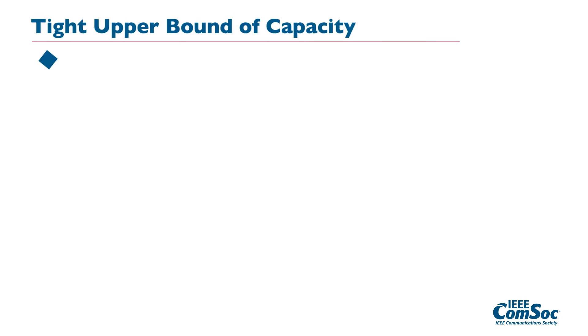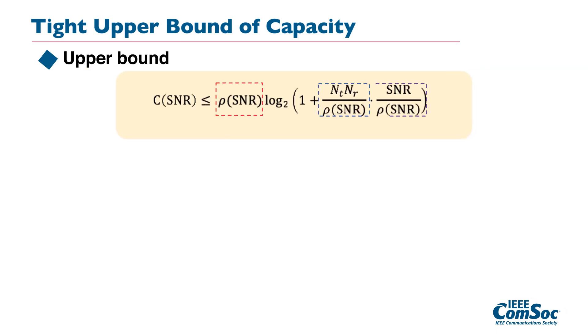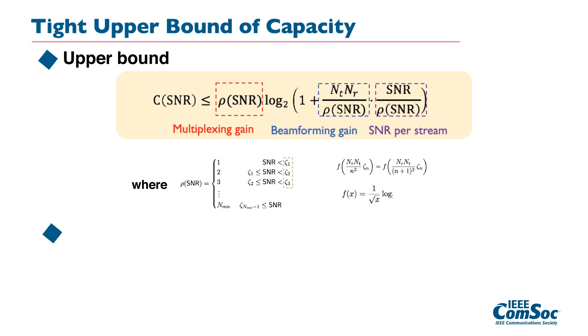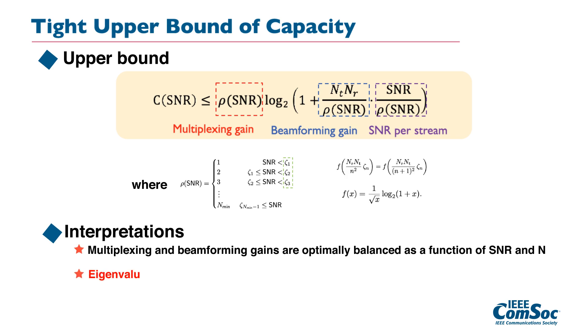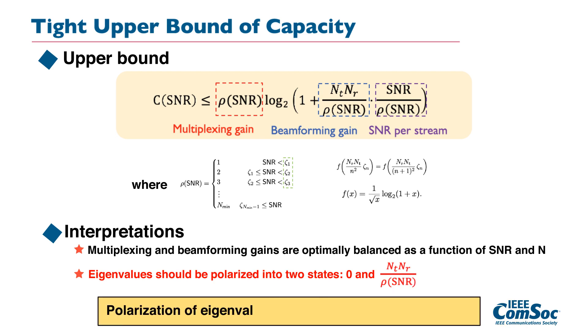Instead of finding the exact expressions, we derived a tight upper bound of the capacity as shown in these equations. It looks quite complicated, but what we found is the following two observations. One is that in order to achieve the upper bound, the multiplexing gain and beamforming gain should be optimally balanced as a function of SNR and the number of antennas, which agrees with our conventional wisdom in classical MIMO theory.